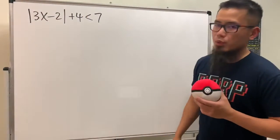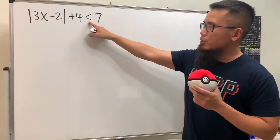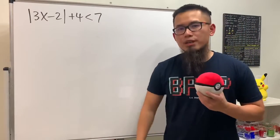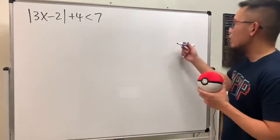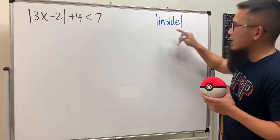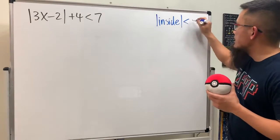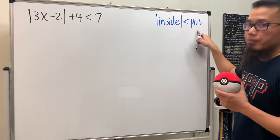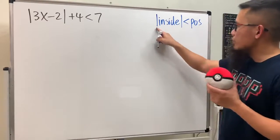Here we'll be solving this absolute value inequality. Notice that this is a less-than situation, so let me remind you what we should be doing. If you have an absolute value of an expression inside, and this is less than a positive number, then you will take out the absolute value.